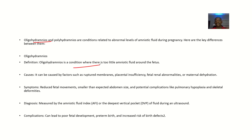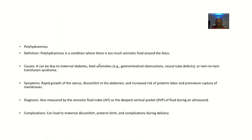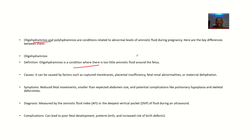For oligohydramnios, amniotic fluid around the fetus is little. For polyhydramnios, there is too much amniotic fluid around the fetus. Causes of oligohydramnios can be due to factors such as ruptured membranes, placental insufficiency, fetal renal abnormalities, or maternal dehydration, leading to a decrease in amniotic fluid.